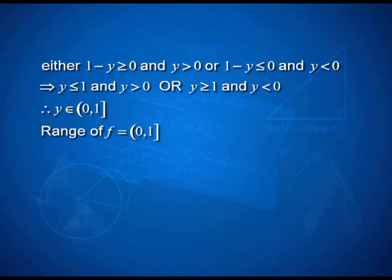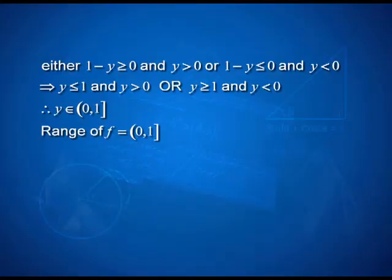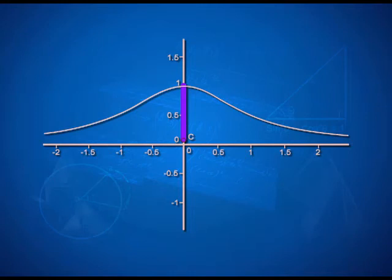Since the second possibility cannot happen, the condition on y — that is, the range — comes out to be the interval open at 0 and closed at 1: y is greater than 0 but less than or equal to 1. Looking back at the graph of this function, you will understand what you have found: the y values remain just above 0 but less than or equal to 1, and that is the significance of the term range of a function. Both domain and range together decide what the shape of the graph of the function is going to be.